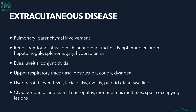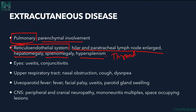Extracutaneous disease: pulmonary involvement causes lung fibrosis and parenchymal involvement. The reticuloendothelial system shows hilar and paratracheal lymph node enlargement, hepatomegaly, splenomegaly, and hypersplenism leading to thrombocytopenia.